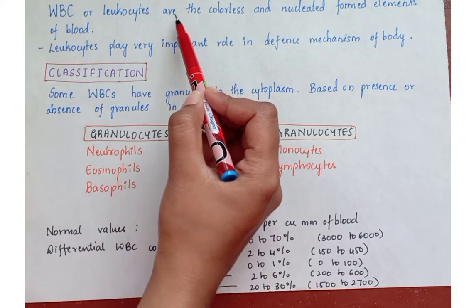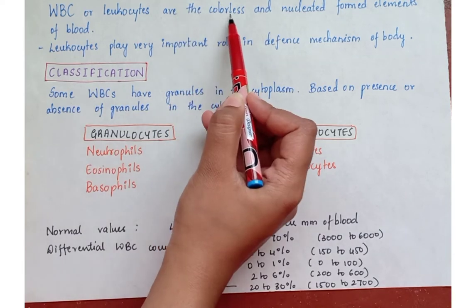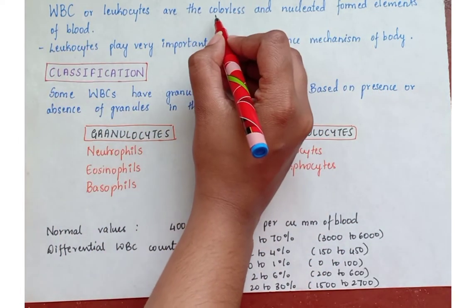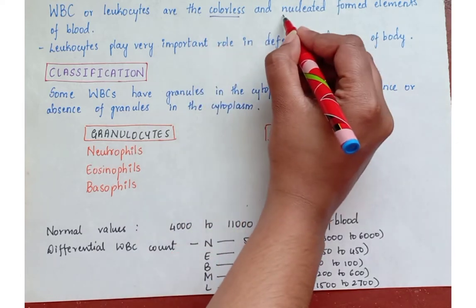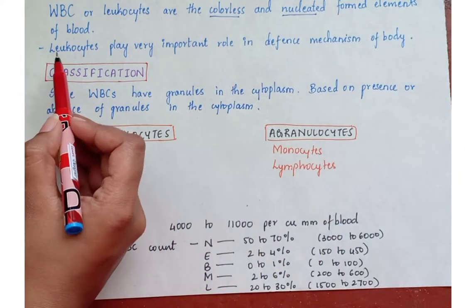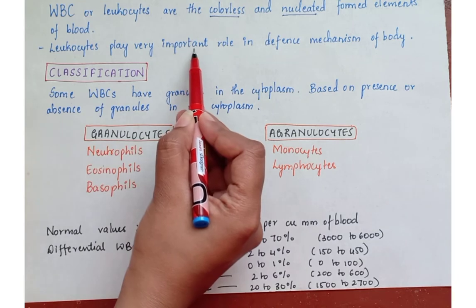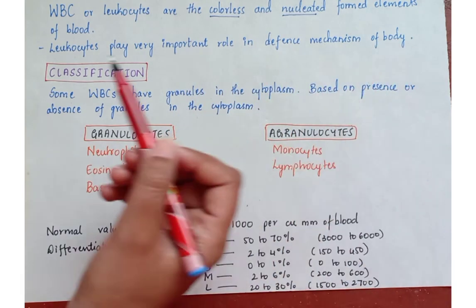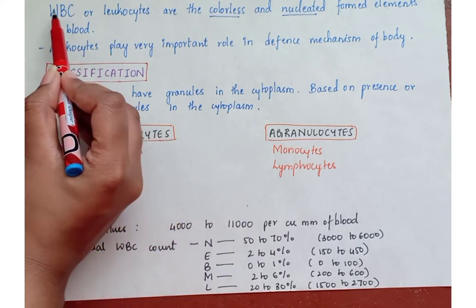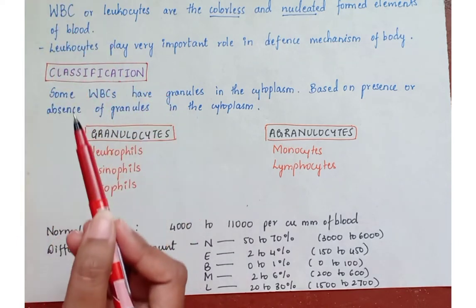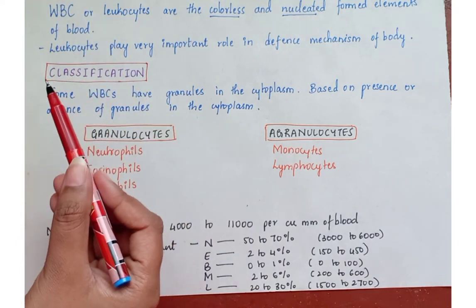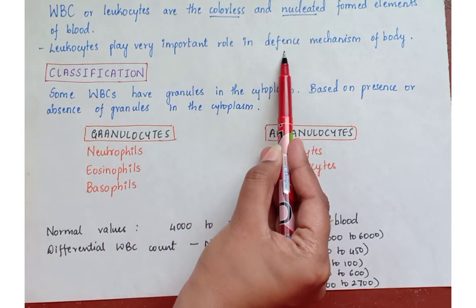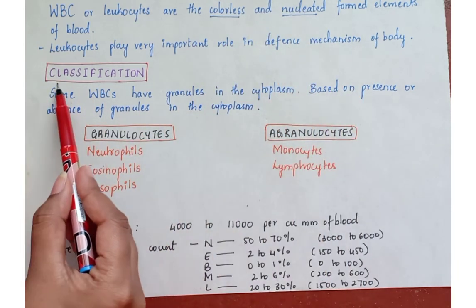WBC or Leucocytes are the colorless and nucleated formed elements of blood. Remember, these are colorless and nucleated. Leucocytes play a very important role in the defense mechanism of the body. WBCs are also called Leucocytes — they are colorless, nucleated, and play a defense role.